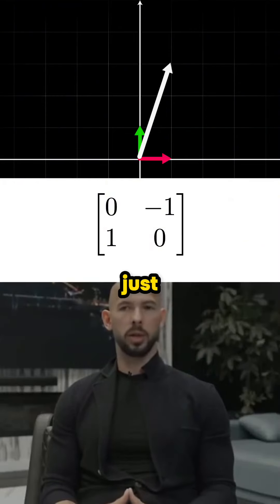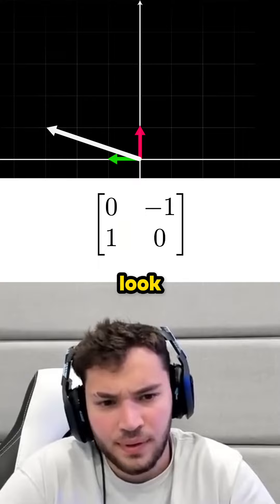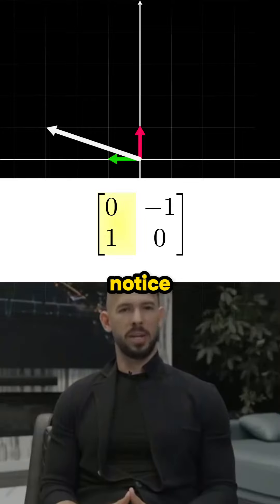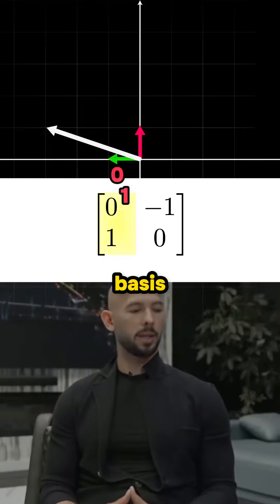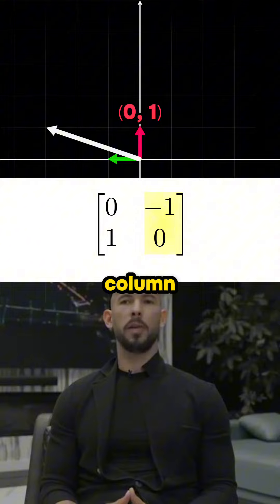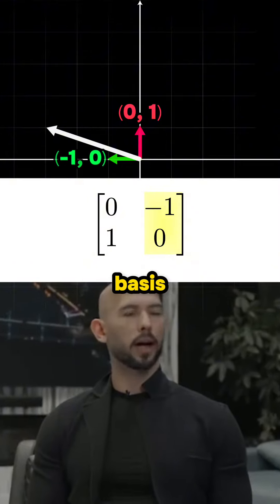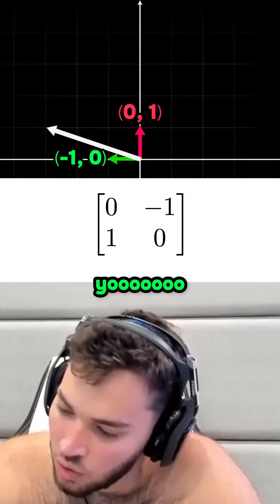So any vector we transform is just going to follow the basis vectors, right? Now look at the first column of the matrix. Notice how that's where the tip of the red basis vector ends up, and the second column tells us where the tip of the green basis vector ends up. Yo! You're moving up!